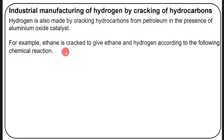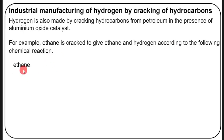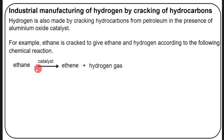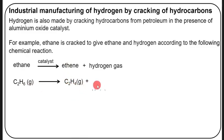For example, ethane is cracked to give ethene and hydrogen, according to the following chemical equation: C₂H₆ → C₂H₄(g) + H₂(g). This is how hydrogen is formed by cracking. The description ends there — it is a short one.